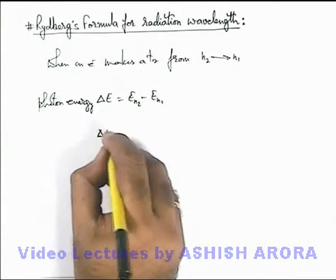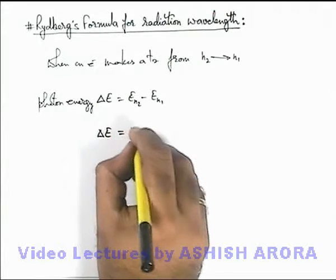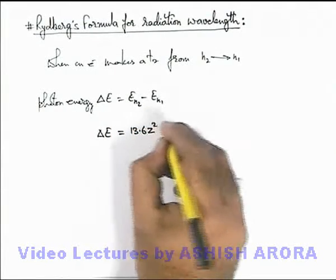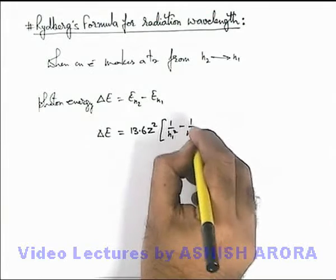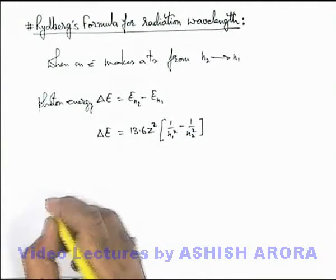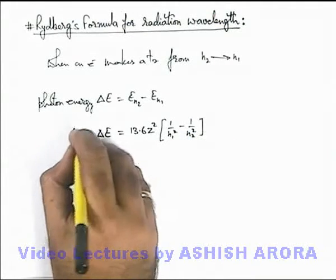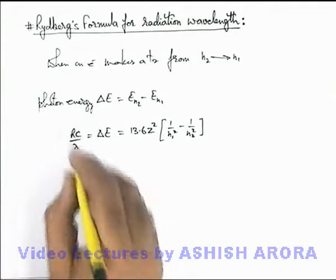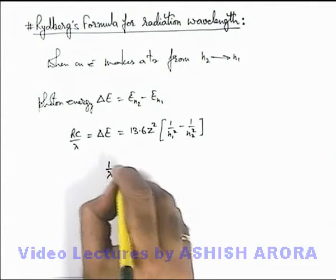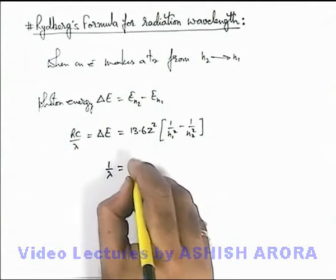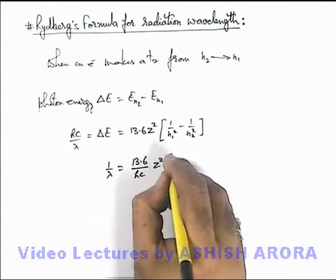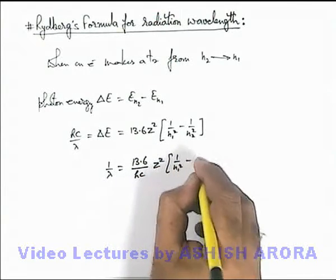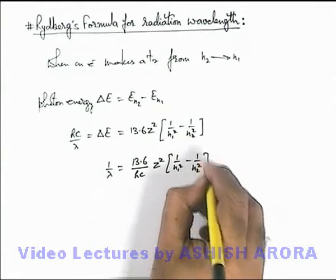In previous section we studied that this delta E we can write as 13.6 Z squared, 1 by n1 squared minus 1 by n2 squared. And this energy we can write as hc by lambda, so here the value of 1 by lambda we can see, this will be 13.6 by hc, Z squared, 1 by n1 squared minus 1 by n2 squared.